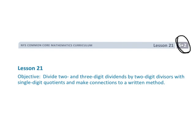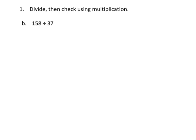This is fifth grade module 2 lesson 21 where we are using the standard algorithm for dividing. For this problem we're asked to divide and then check our answer using multiplication, so we're going to take 158 and divide by 37.